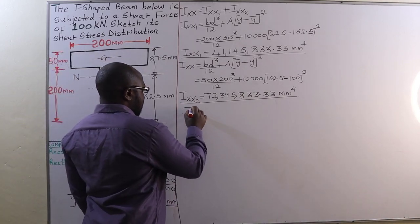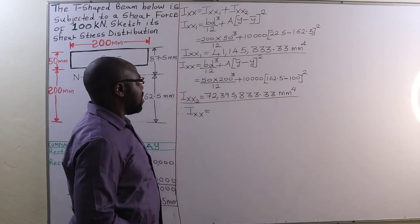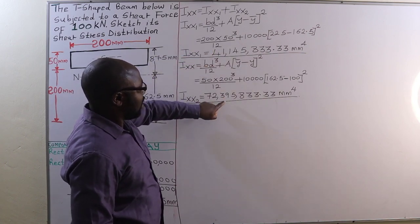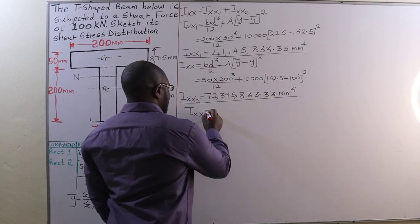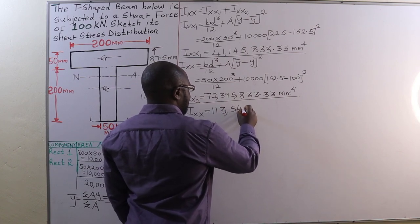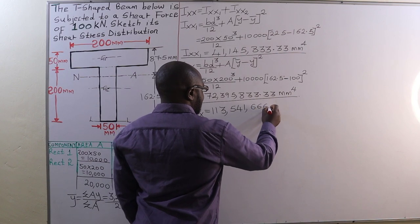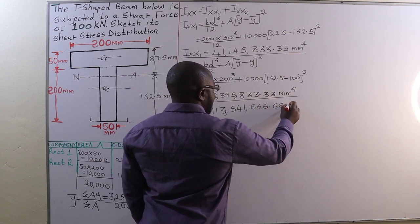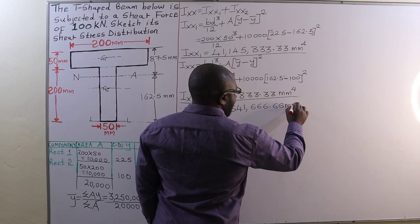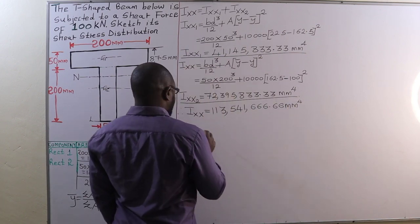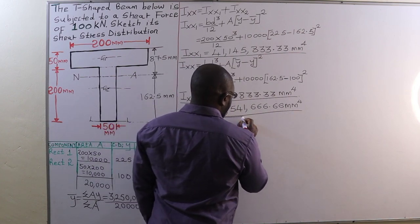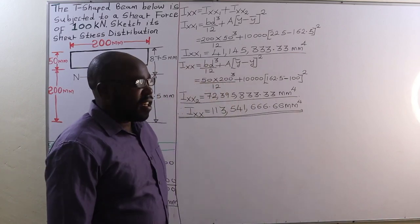The total moment of inertia of the T-beam section is Ixx1 plus Ixx2, giving a total of 113,541,666.66 mm⁴.